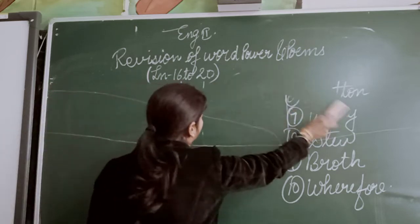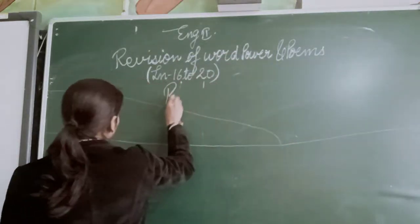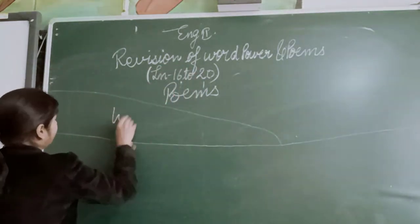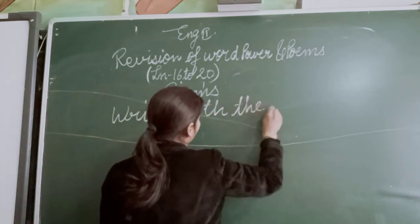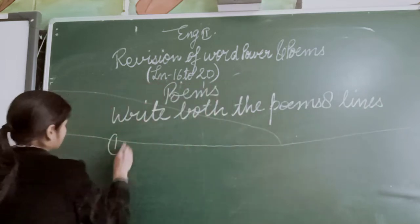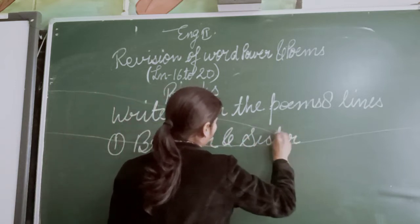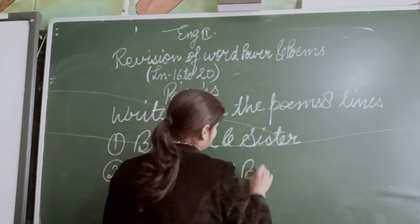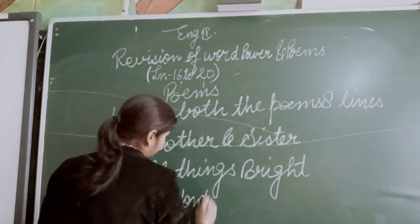As you know, in the second periodic portion there are two poems. You have to write both poems — eight lines each. The first poem is 'Brother and Sister' and the second one is 'All Things Bright and Wonderful.' Write both poems, eight lines each.